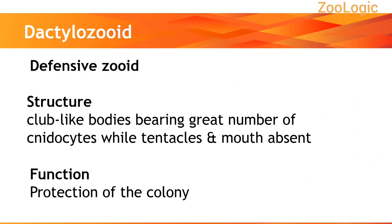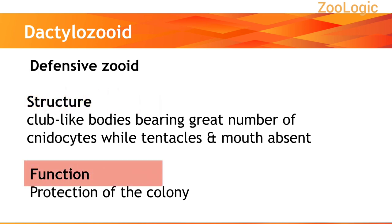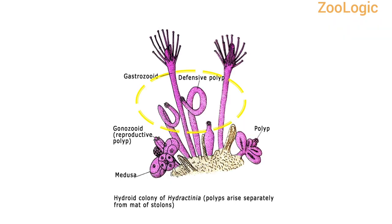The third individual in a hydroid colony is the Dactylozoid. They are defensive individuals. Their bodies are club-like, bearing a great number of nematocytes, while tentacles and mouth are absent. Their function is to protect the whole colony. In this hydroid colony of Hypertemia, it is evident how Dactylozoids are morphologically adapted, having club-like bodies with no mouth and tentacles. I have highlighted the part where the defensive polyps, meaning Dactylozoids, are present.